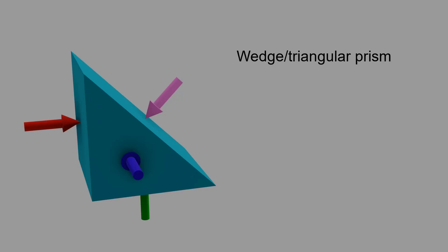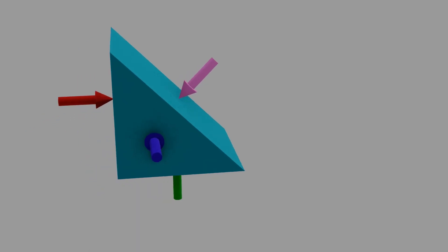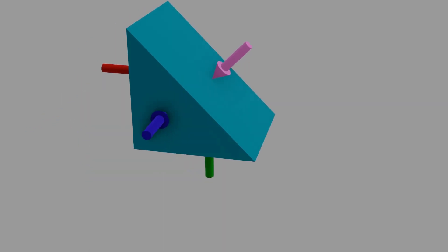The wedge-shaped element is also known as a right-angled triangular prism. Let the dimensions of the triangular prism be dx, dy, and dz.